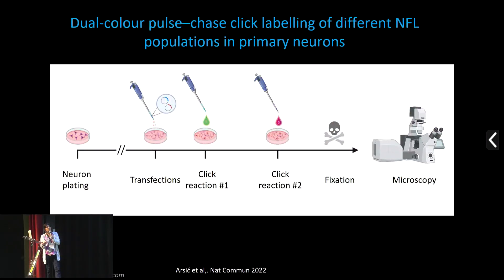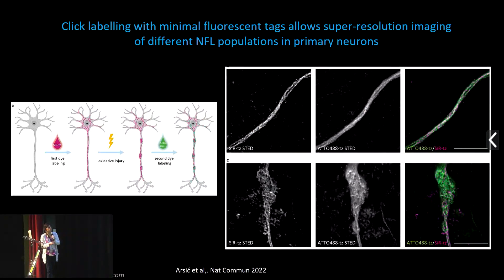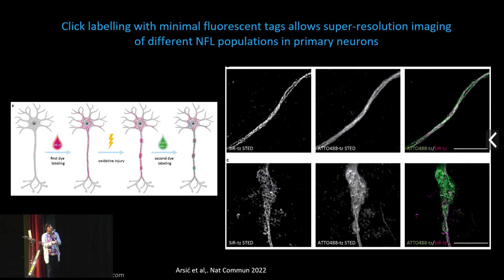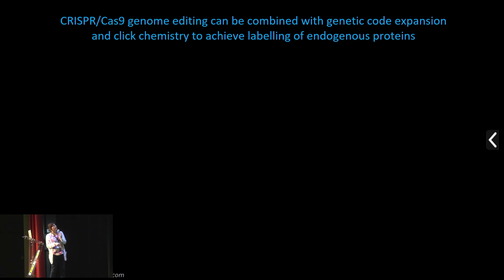What I find powerful about this type of labeling is that you can do pulse-chase studies: perform the first click reaction in living neurons, apply some stimulus — in our case an injury — then do the second type of reaction, and either fix cells or image them live. In my group we study oxidative stress injury, where we can now look at different populations of neurofilaments synthesized before and after injury, combined with STED microscopy comparing healthy and injured neurons.